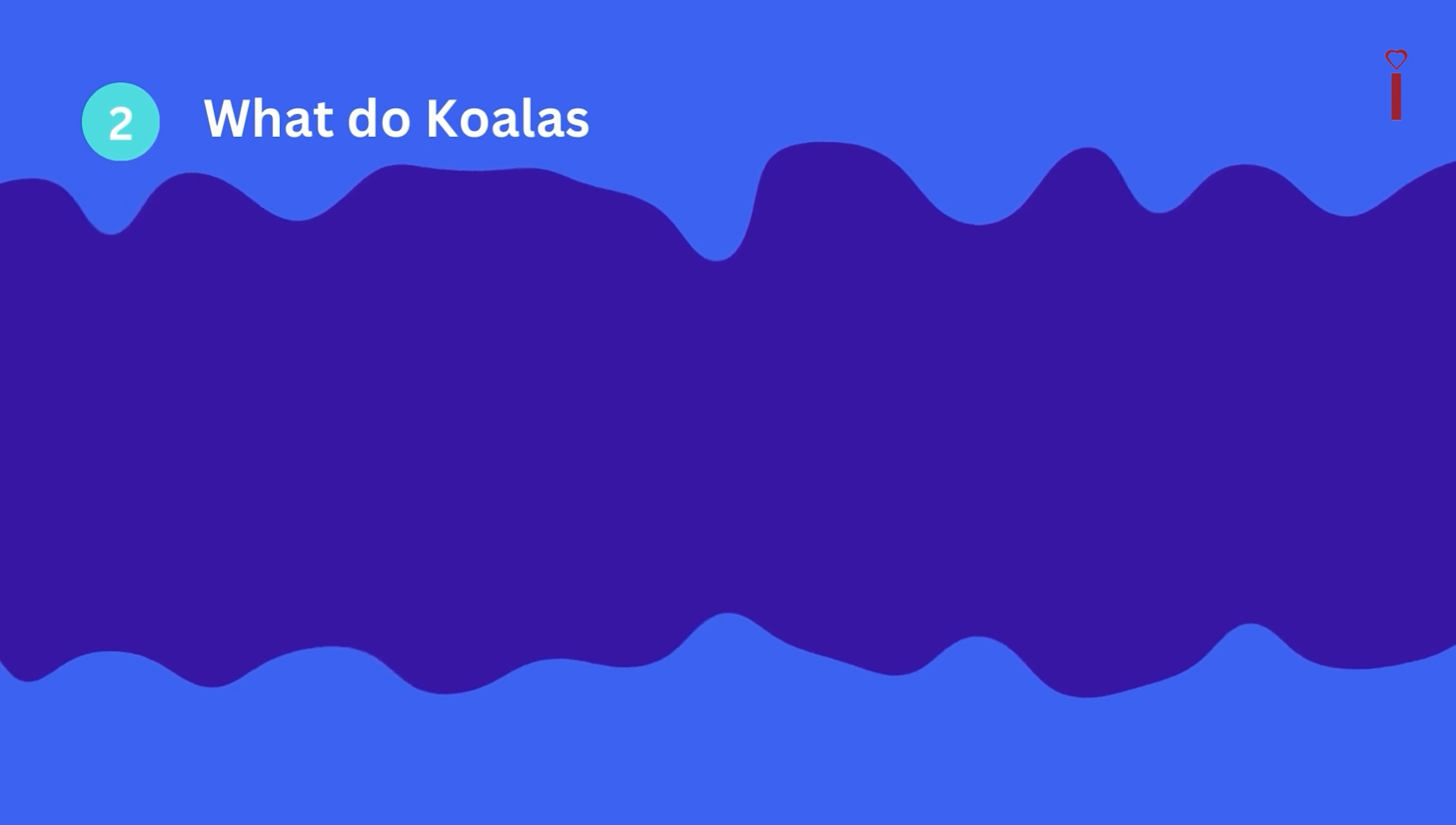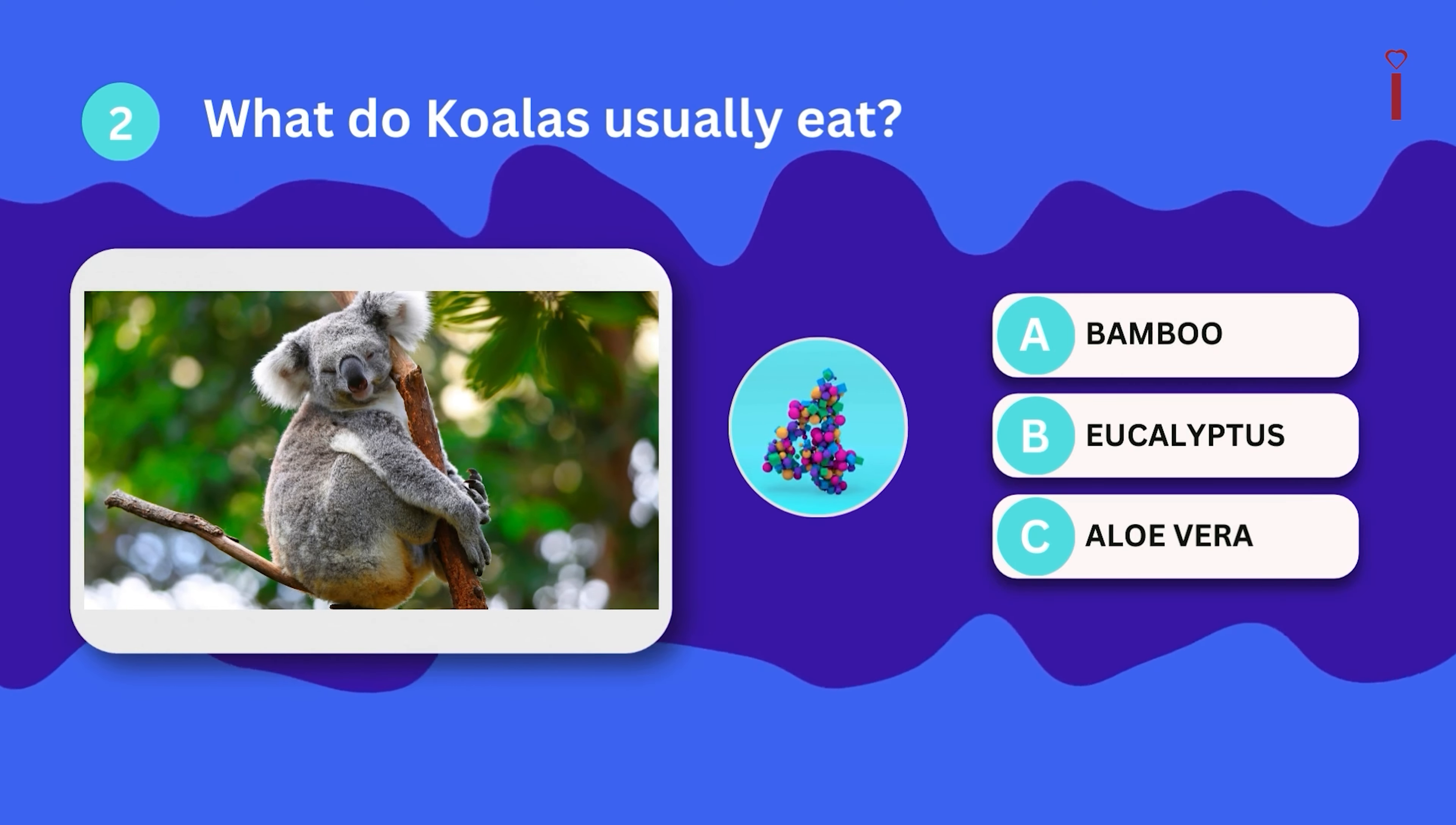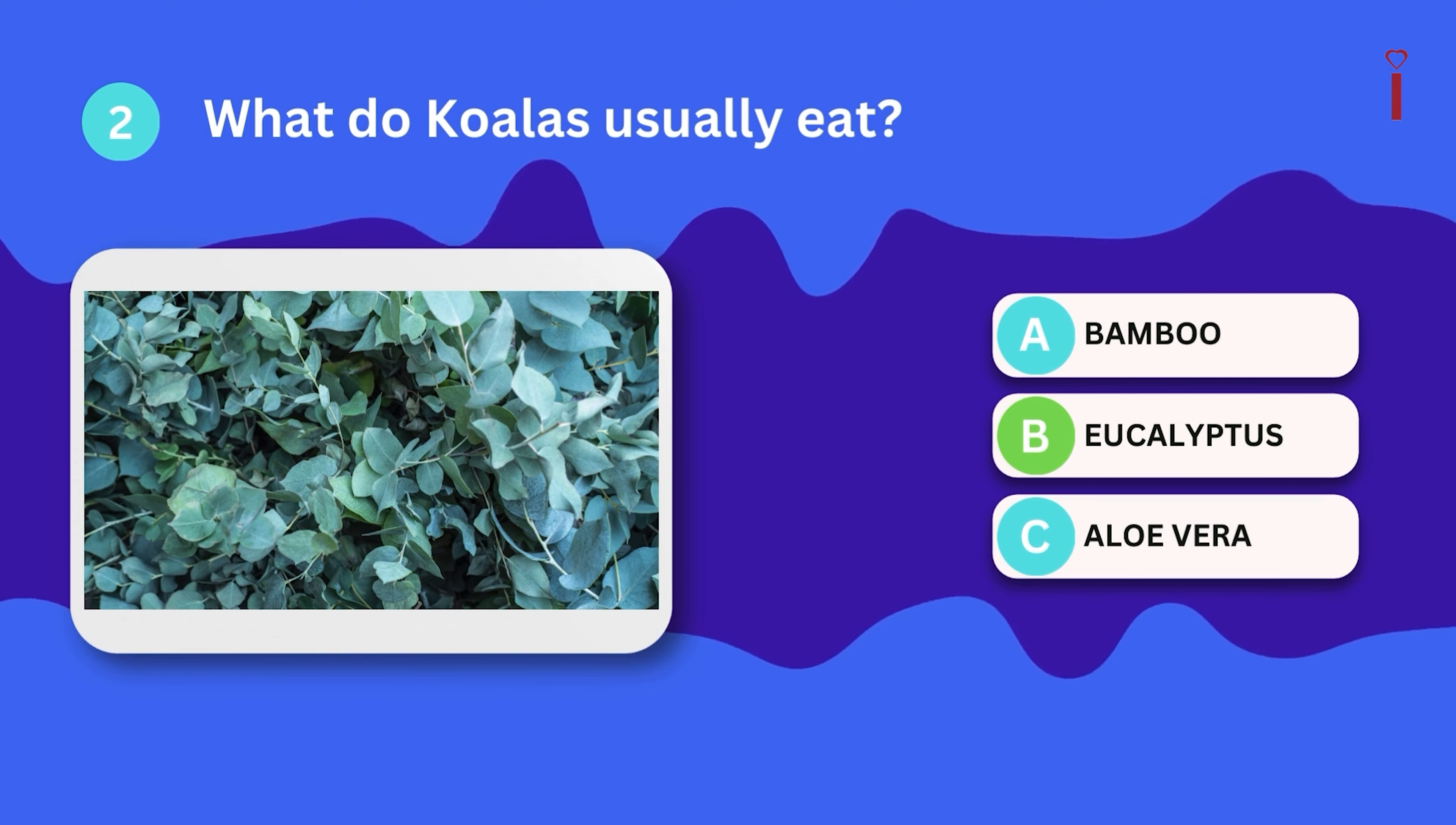Moving on to question number two. What do koalas usually eat? Bamboo, eucalyptus, or aloe vera? The correct answer to this question is eucalyptus.